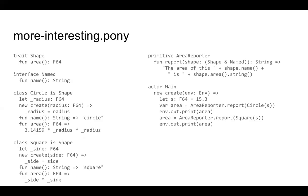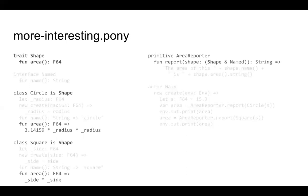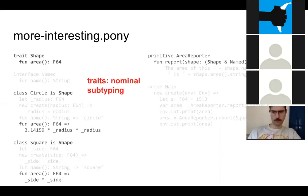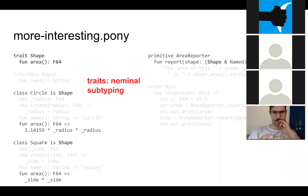This program calculates the area of different kinds of shapes — a circle and a square. We have a trait called shape. Traits give us nominal subtyping, meaning we can say a class is of type shape. The circle and square classes are of type shape, so they implement the functions listed in shape — in this case, an area function. Over in the area reporter, we take objects of type shape that also implement the named interface.